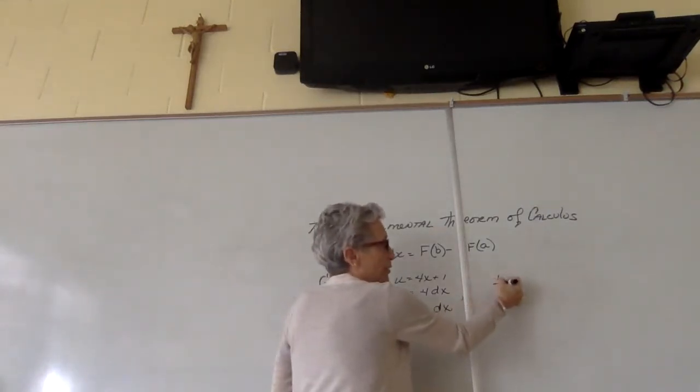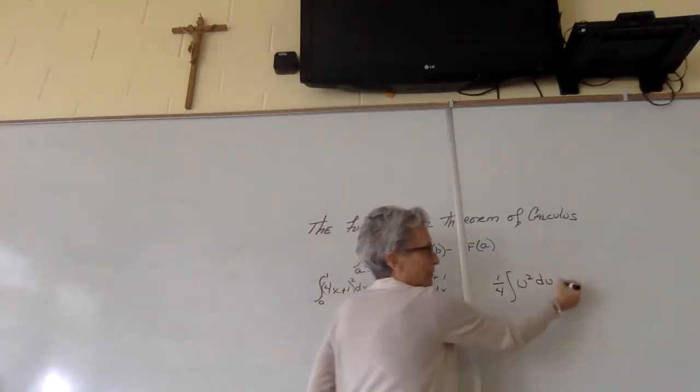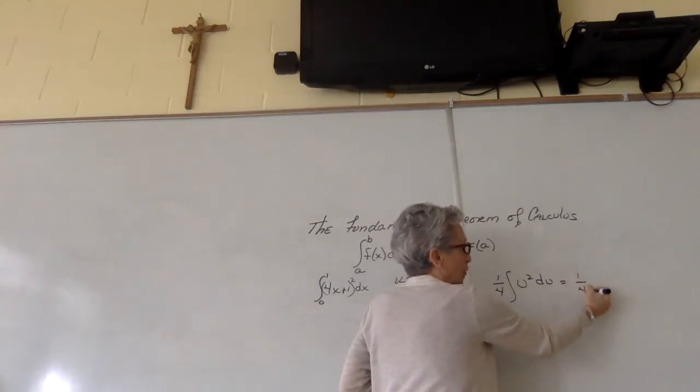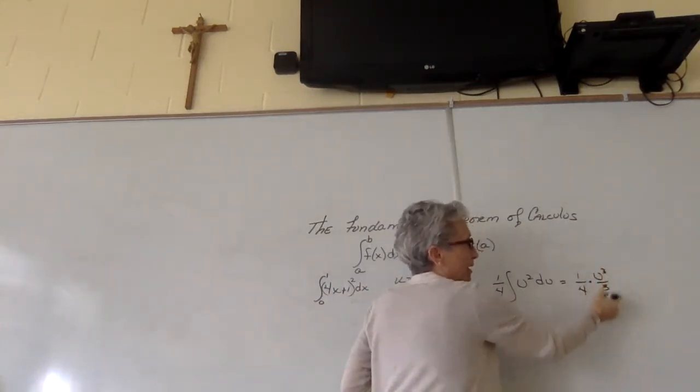You continue on and have one-fourth the integral of u squared du, which gives you one-fourth times u to the third over 3. However,